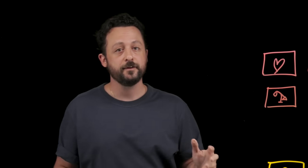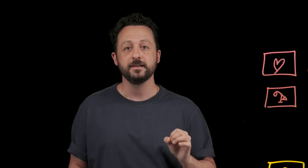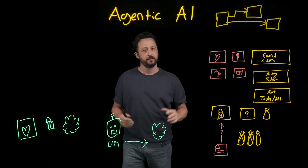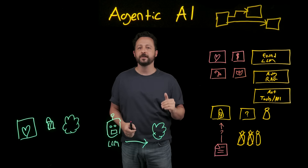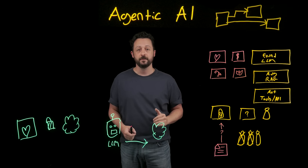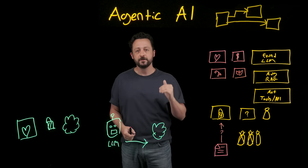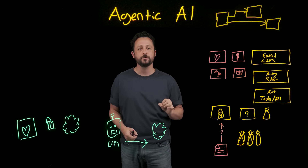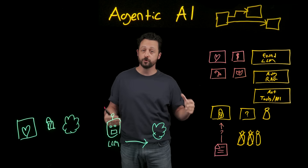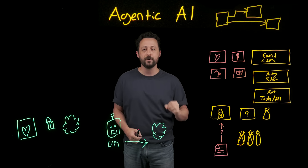These developers and teams know the value of agents, and they had to find a way to implement them. Private agentic flows are a necessity if you're building applications that handle sensitive data. And as AI becomes more integrated into sensitive and critical workflows, the question will not be 'should we go private,' but rather 'how quickly can we get there?'